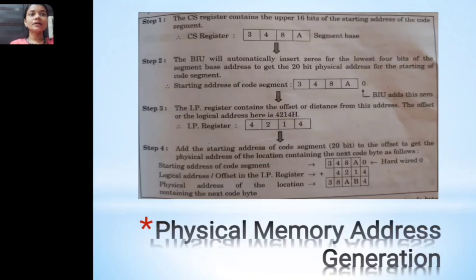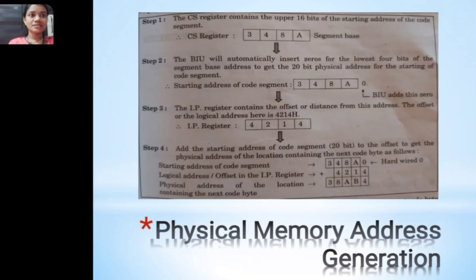Next is physical memory address generation. There are four steps. Step 1: the CS register contains the upper 16 bits of the starting address of the code segment. For example, if the code segment address is 348AH, the CS register holds 348AH.